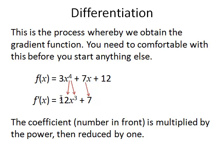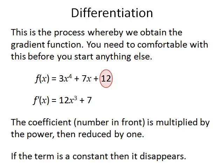So 3 times 4 is 12, and then the 4 is reduced to 3. 7 times 1 is 7, and when you take away 1 power of x, you're left with nothing. If the term is constant, then it disappears.